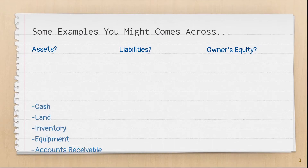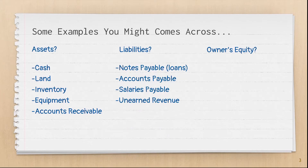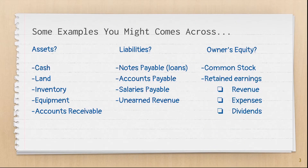Some examples of assets are cash, land, inventory, equipment, and accounts receivable. Some common liabilities are notes payable, accounts payable, salaries payable, and unearned revenue. Owner's equity is made up of common stock and retained earnings. Under retained earnings, you have revenue, expenses, and dividends.